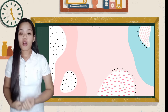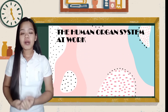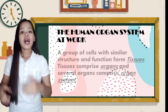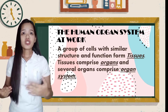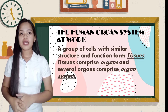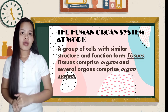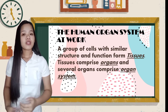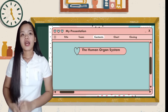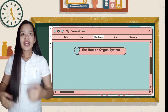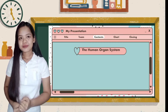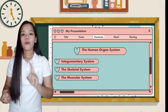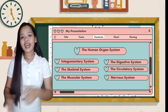The human organ system is complex. The human body is made up of trillions of cells with different size, shapes, and function. A group of cells with similar structure and function form tissues. Tissues comprise organs, and several organs comprise an organ system. The human organ systems are: integumentary, skeletal, muscular, digestive, circulatory, and the nervous system.